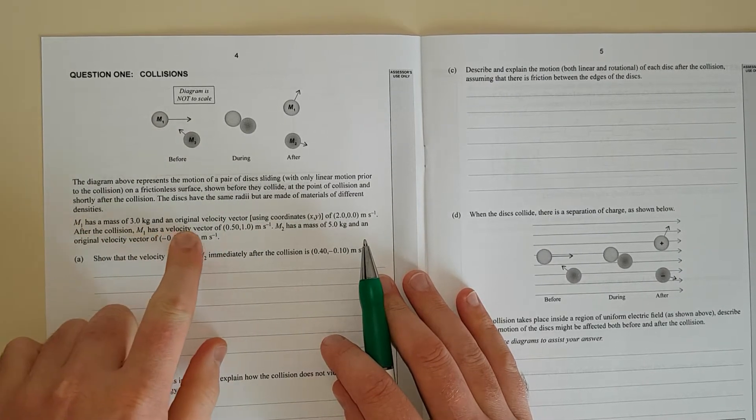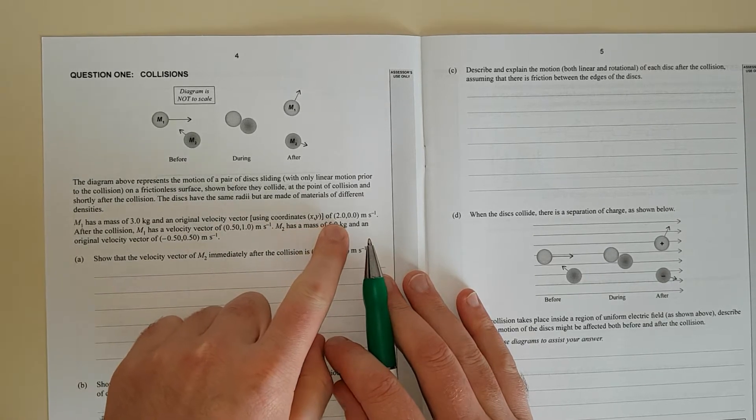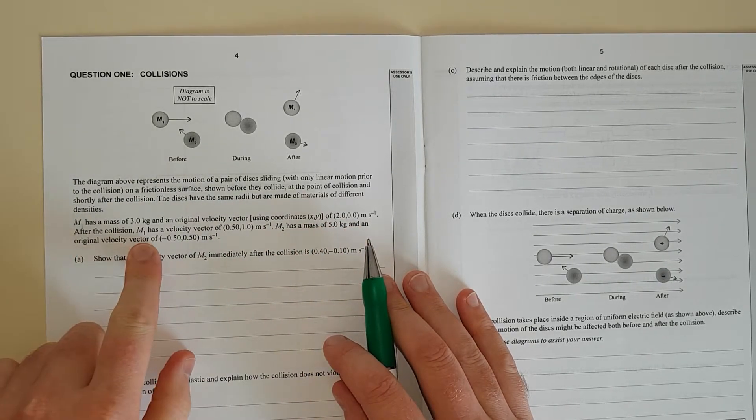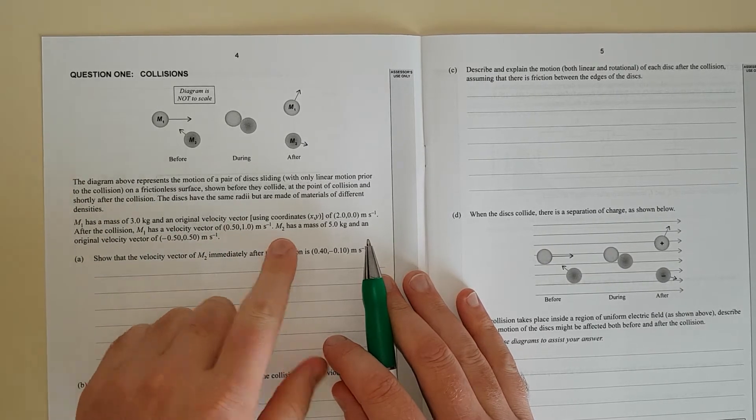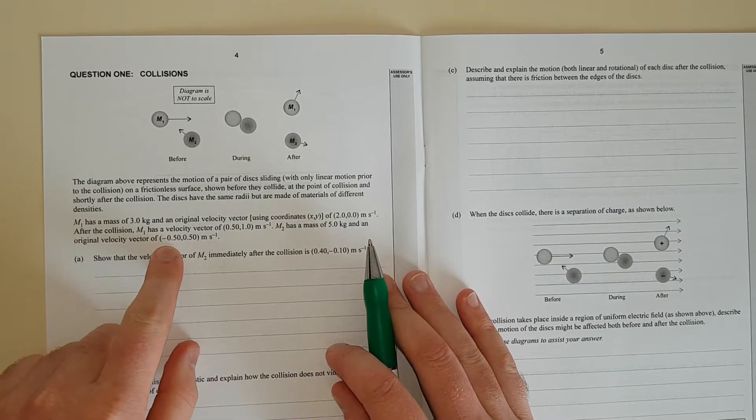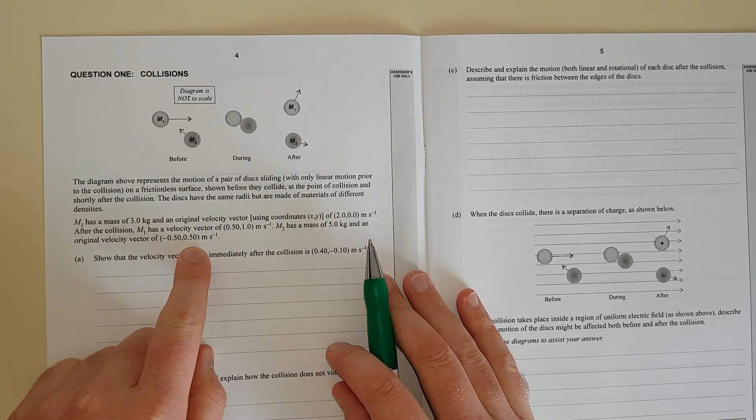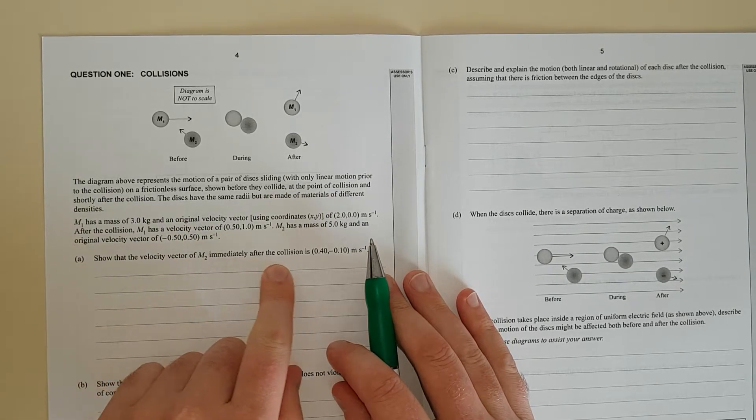M1 has a mass of 3 kg with an original velocity vector using Cartesian coordinates 2 and 0. After the collision it's got 0.5 and 1 m per second. M2 is 5 kg, so it's heavier, and it's got negative 0.5 and 0.5 initially. They say show the velocity vector immediately after the collision.